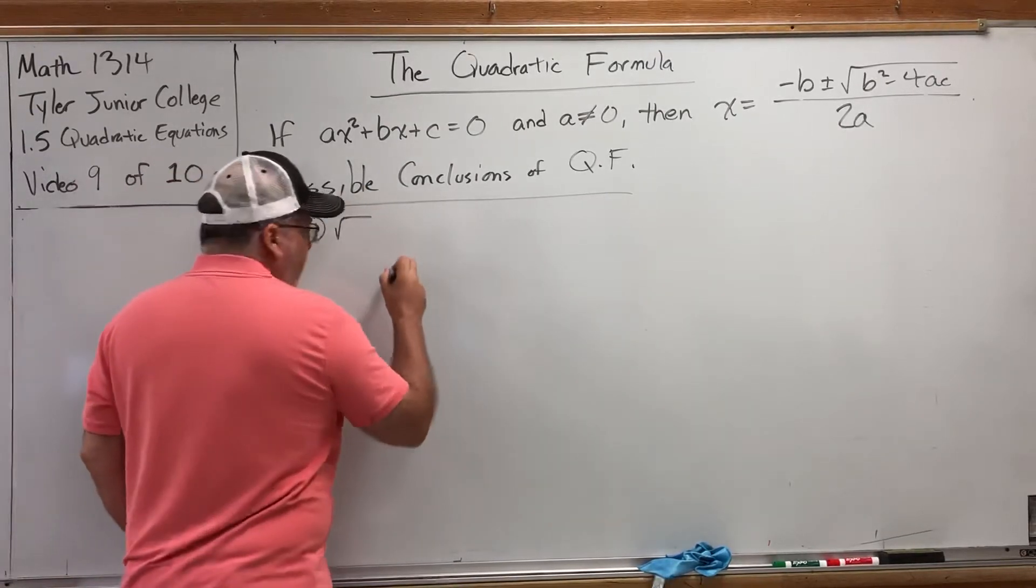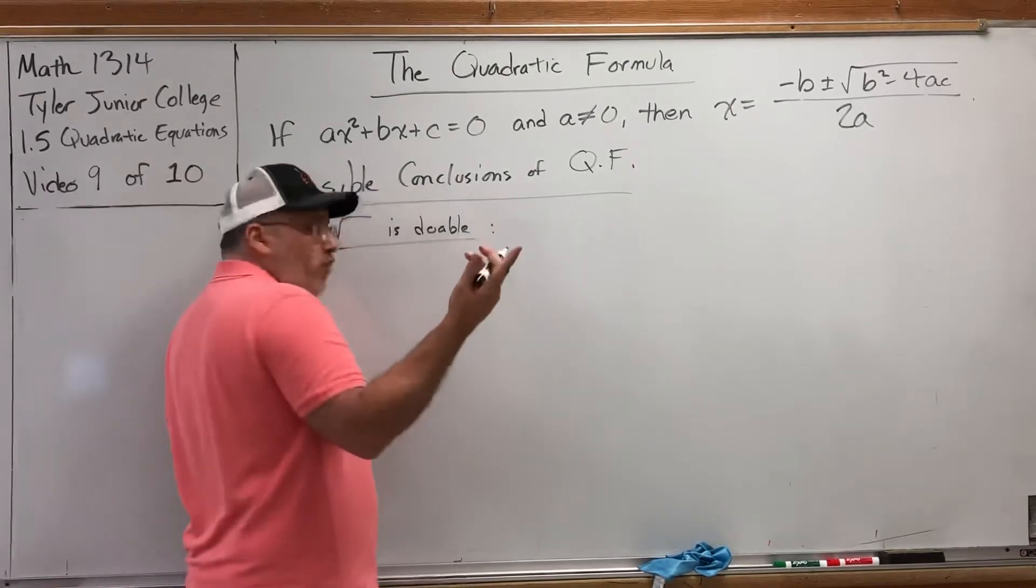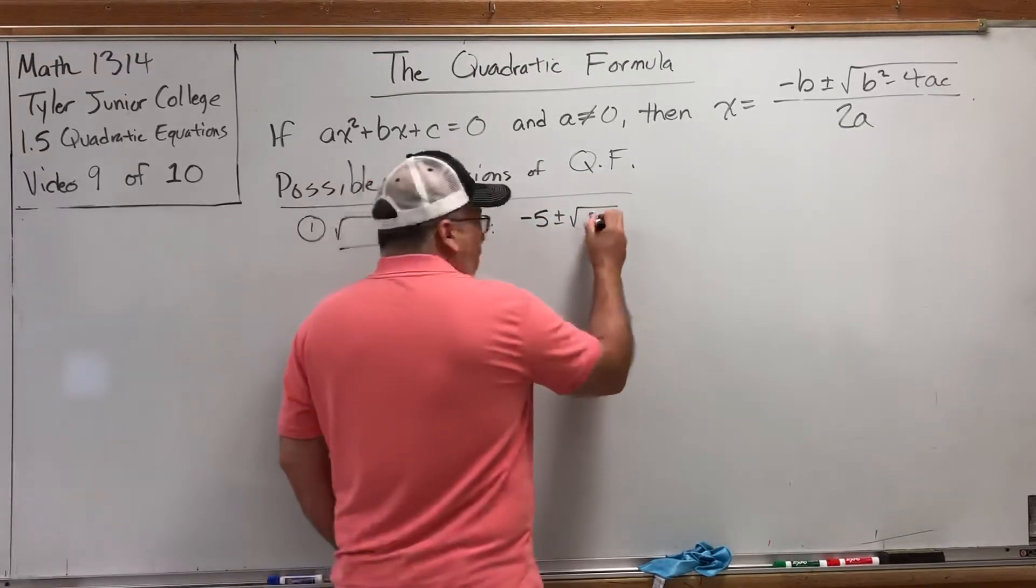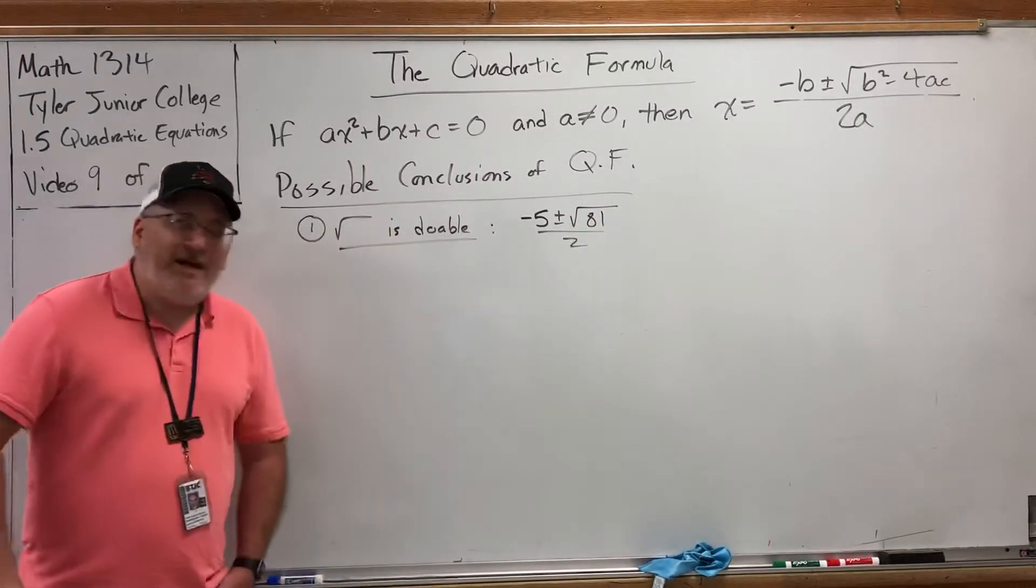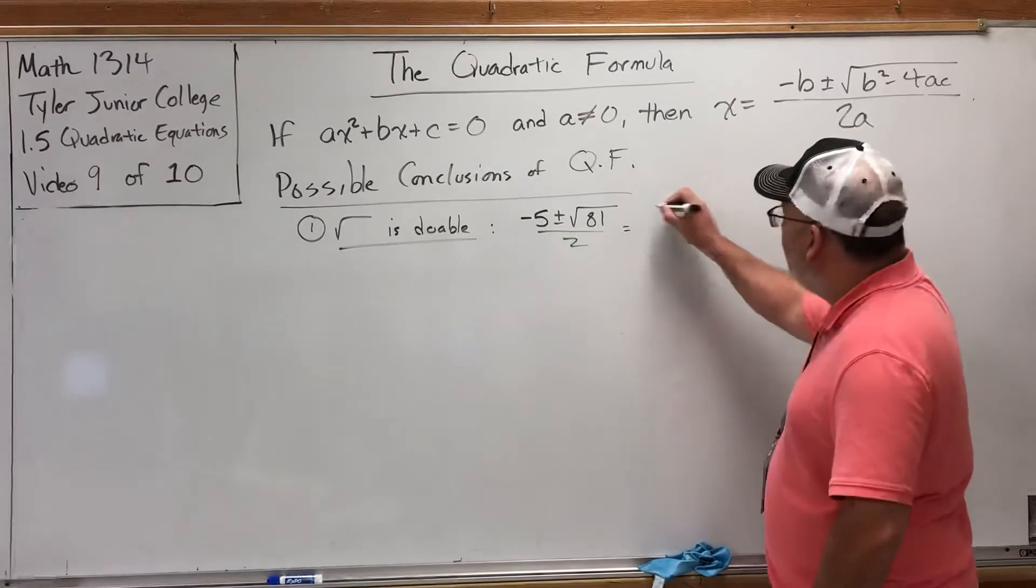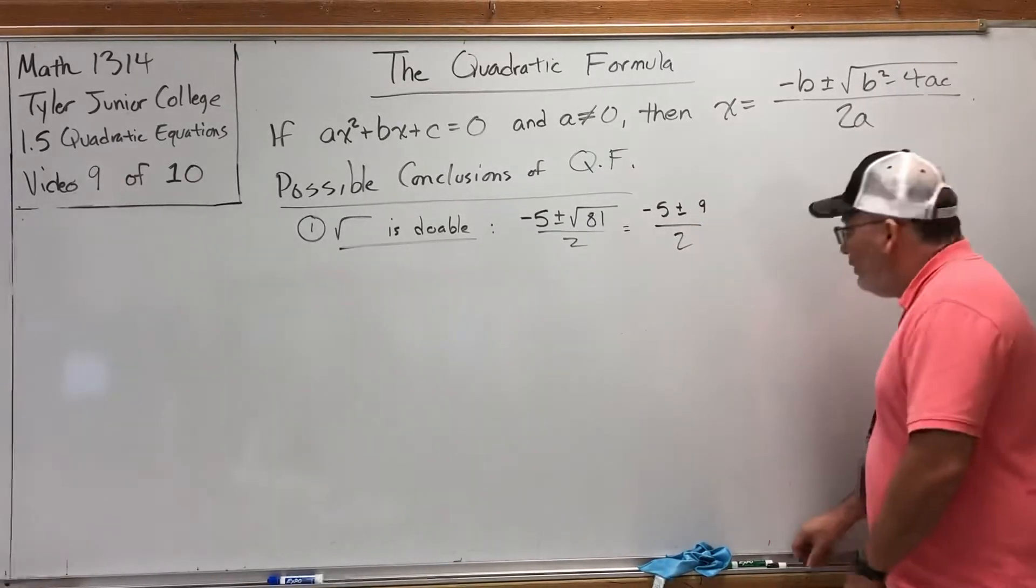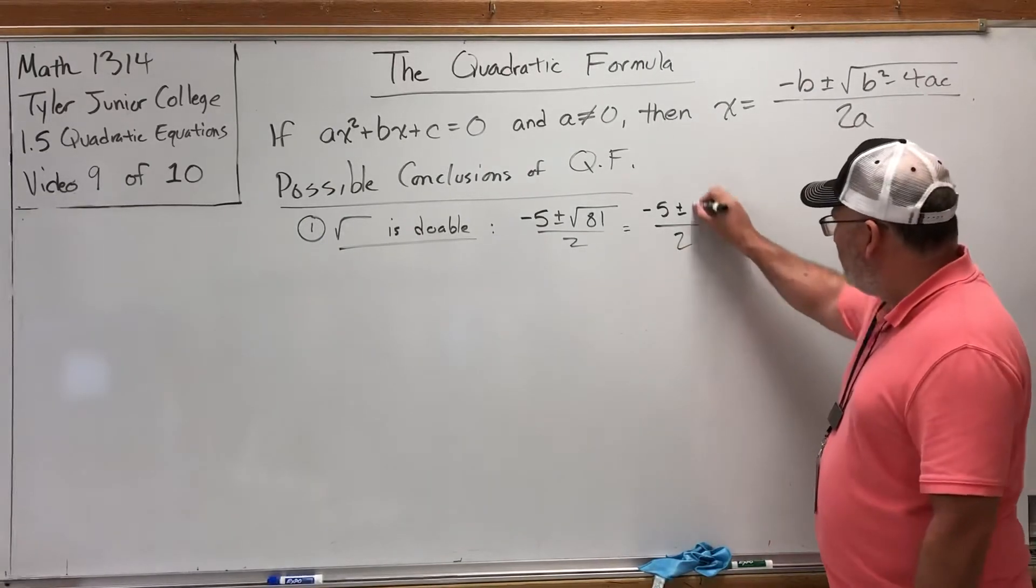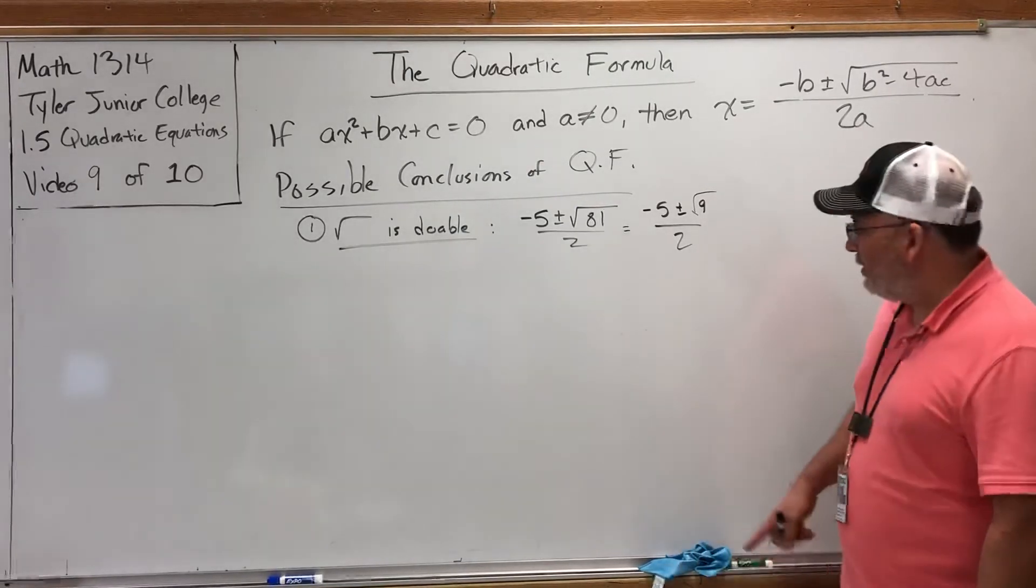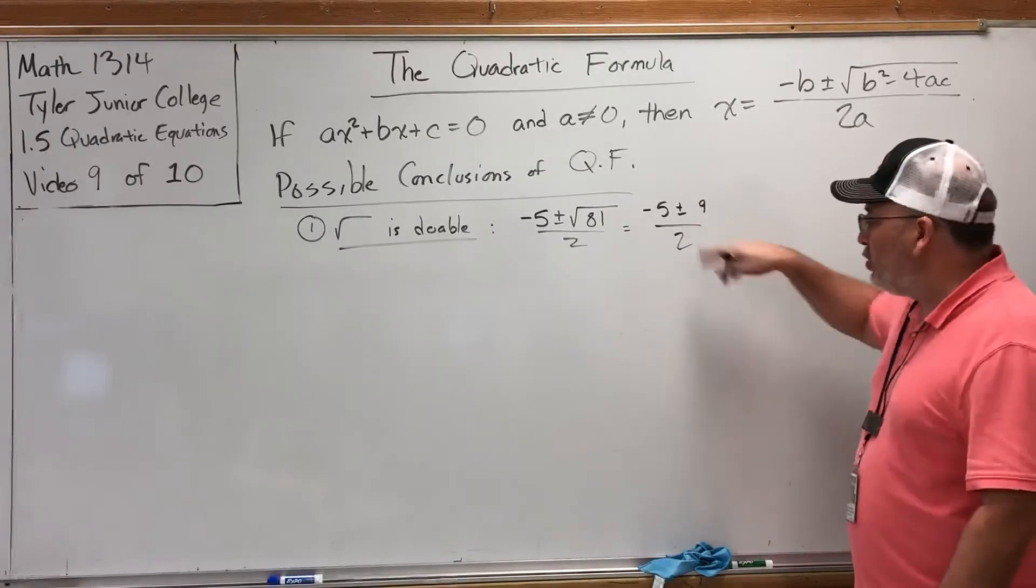Number one, the square root is doable. Meaning that you can actually do the square root. So for example, we can wind up somewhere like this. Negative 5 plus or minus the square root of 81 over 2. If you gave me enough time, I could build a quadratic equation that would take us here, but that's not the point. The point is, if you've got here, you can do the square root of 81. What is the square root of 81? Nine. Do me a favor. Whatever you're doing, look right now. Don't do this. Square root of 81 is the square root of nine. Stop. When you do the square root, it's not a square root anymore.